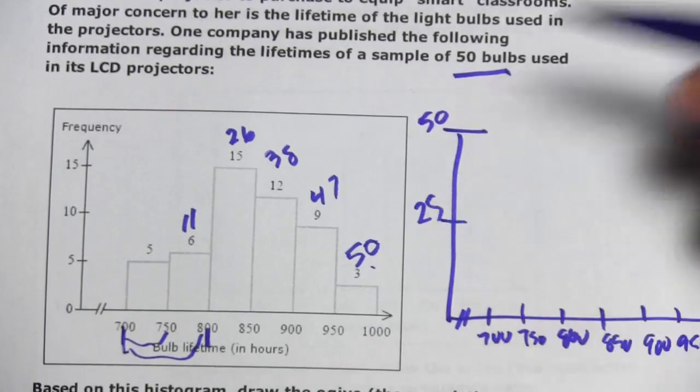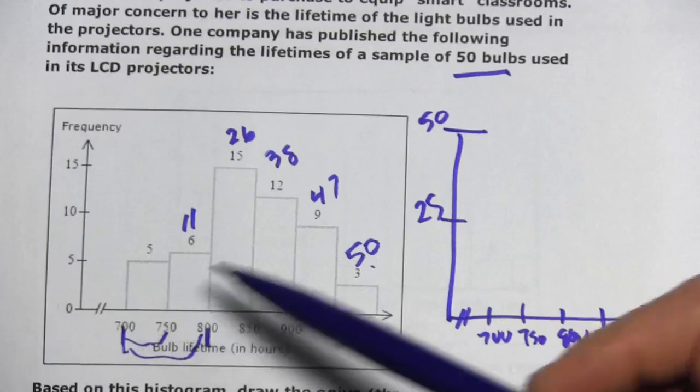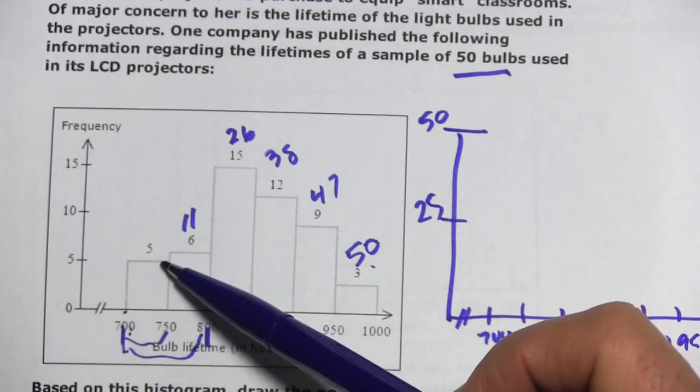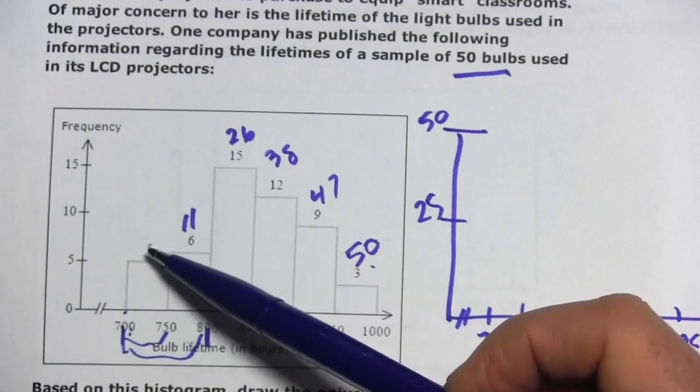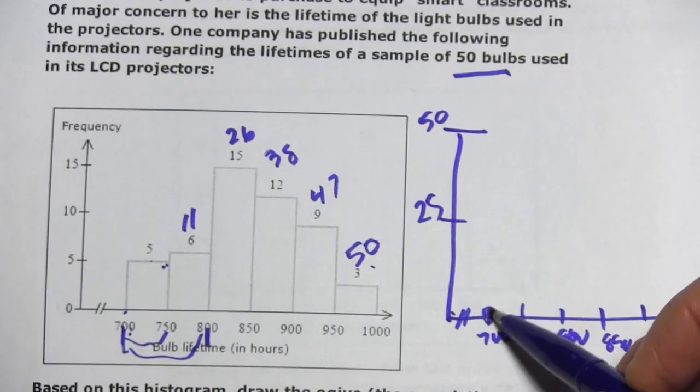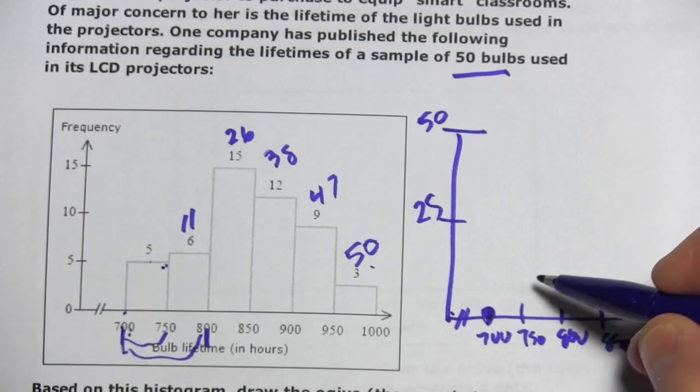And then all we do is plot the points we figured out. Now at 700, we're starting at 0, and by the time we get to 750, we've got a total of 5. We'll go 0 at 700, and then 5.